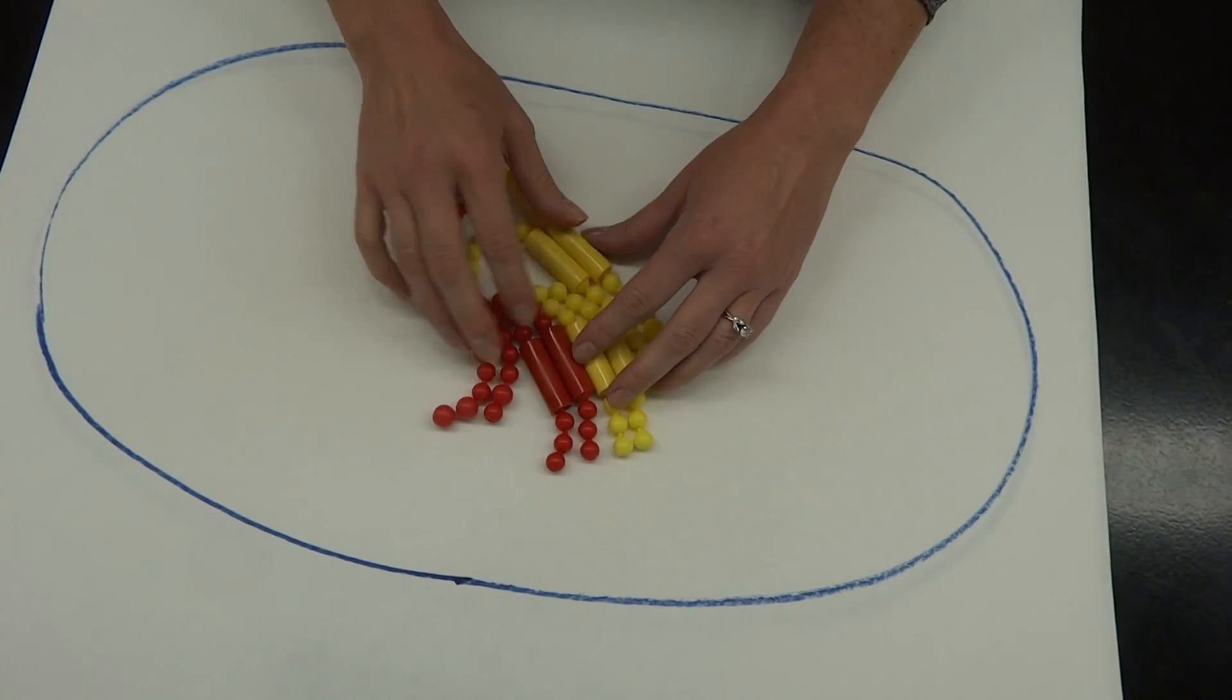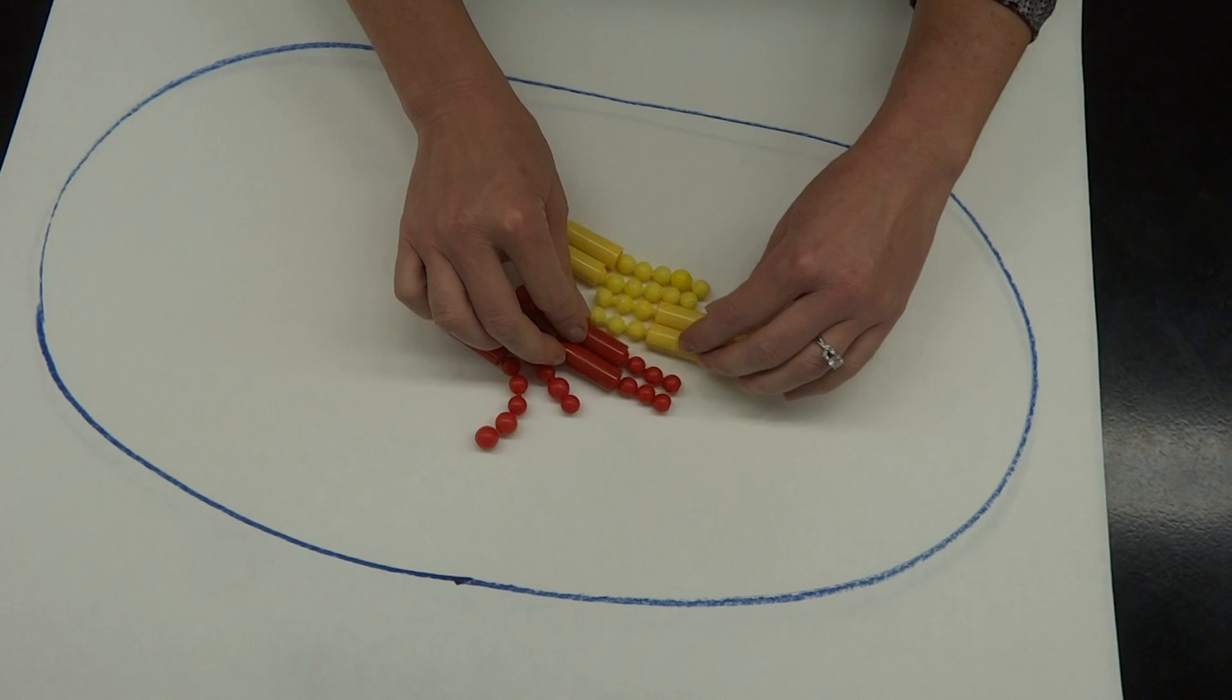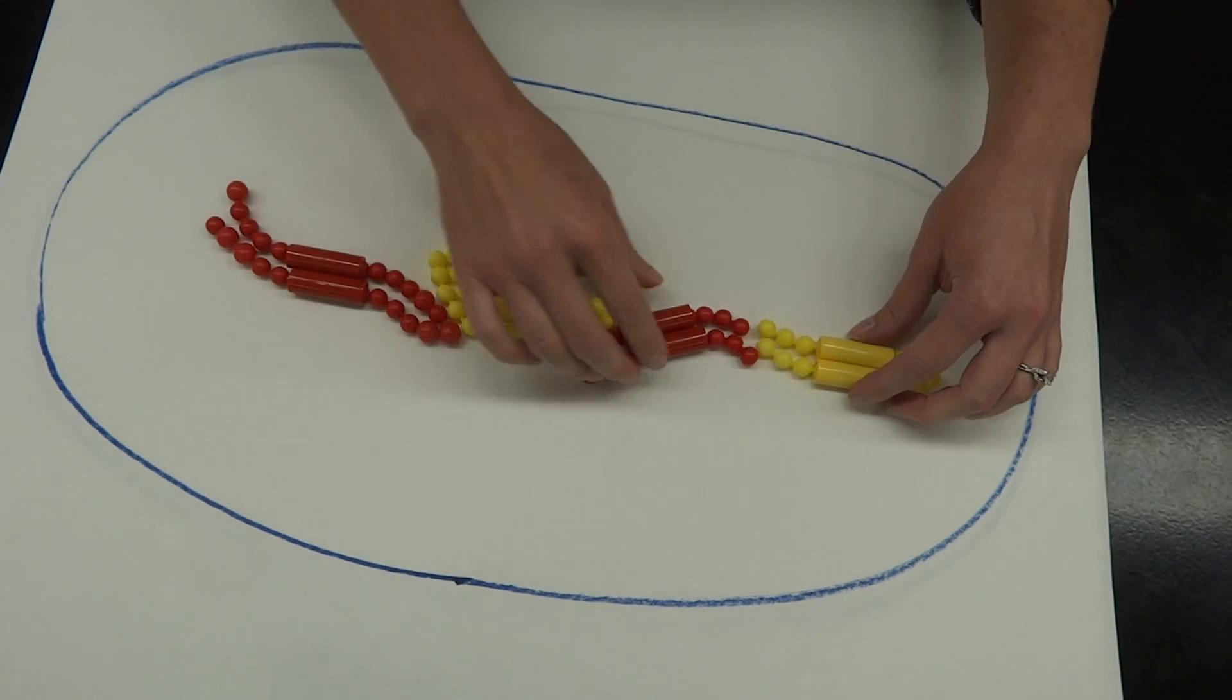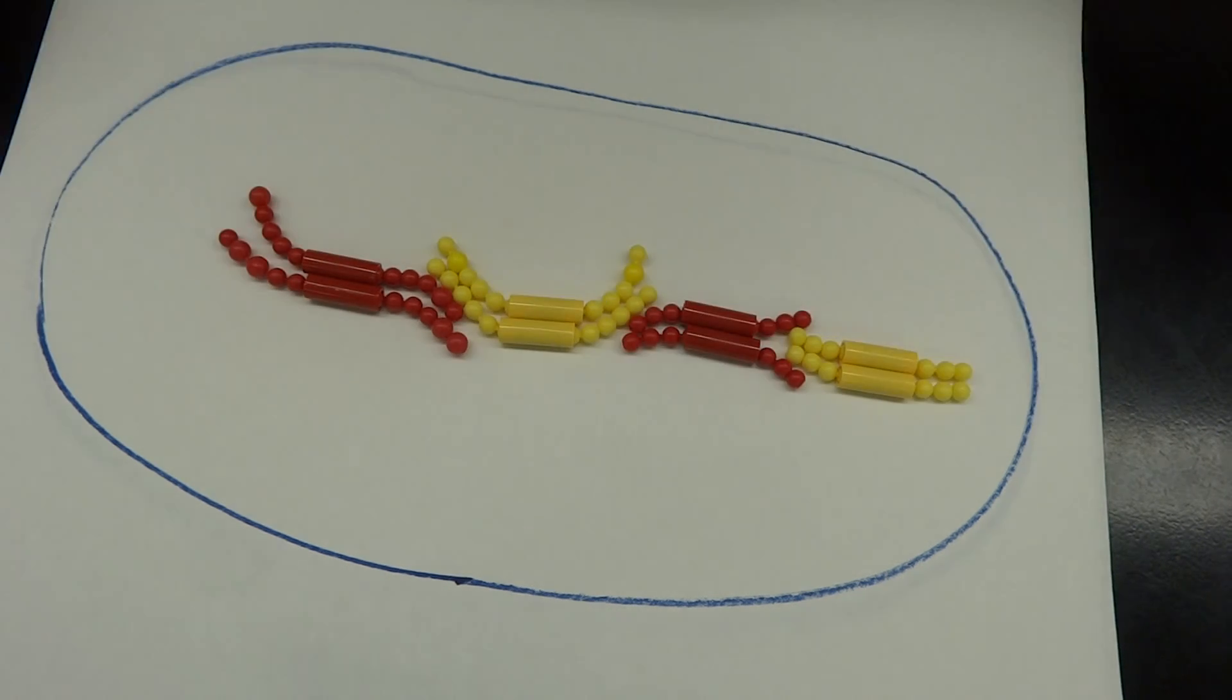And as we move into metaphase, the spindles are going to start making our chromosomes line up along the metaphase plate. Okay, so we have all of our chromosomes happily lined up along our metaphase plate.